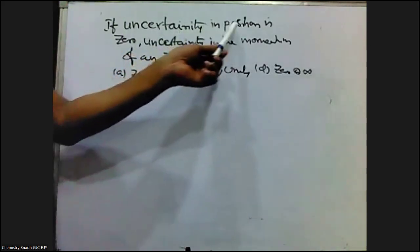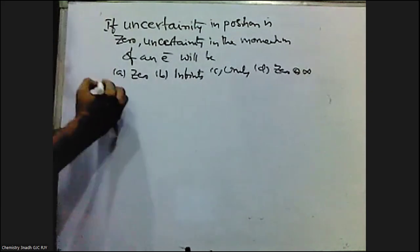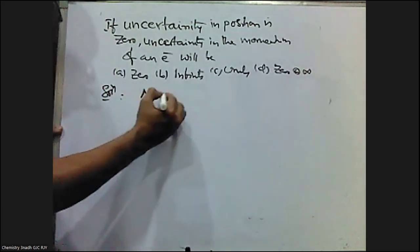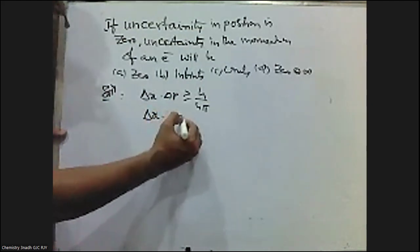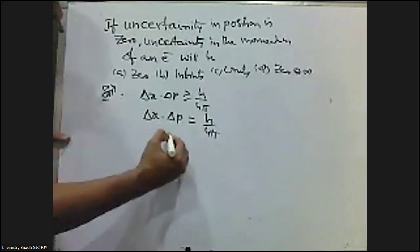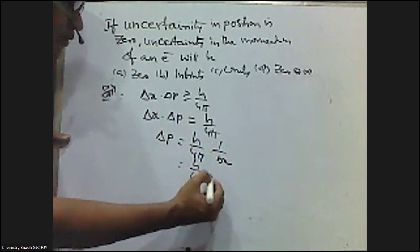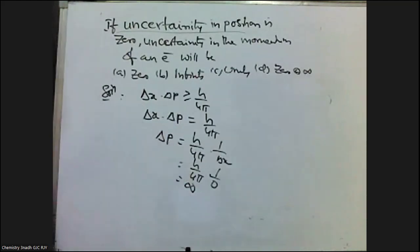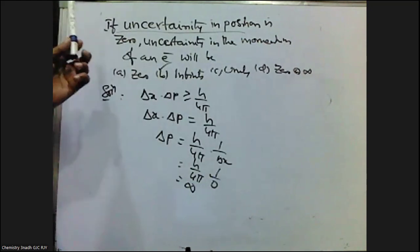Next question: if the uncertainty in position is 0, the uncertainty in the momentum of an electron will be? We know Δx · Δp = h/4π, so Δp = h/(4π · Δx) = h/(4π · 0), which gives infinity. So if uncertainty in position is 0, uncertainty in momentum of the electron will be infinity.